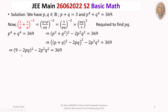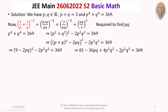Expanding (9 minus 2PQ)², we get 81 minus 36PQ plus 4P²Q². So the equation becomes 81 minus 36PQ plus 4P²Q² minus 2P²Q² equals 369. Combining like terms: 4P²Q² minus 2P²Q² gives 2P²Q², so we have 2P²Q² minus 36PQ plus 81 minus 369 equals 0, which simplifies to 2P²Q² minus 36PQ minus 288 equals 0.